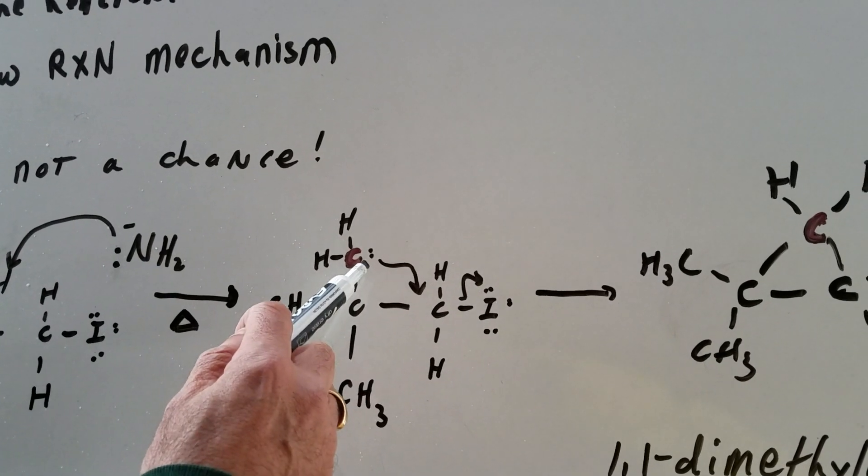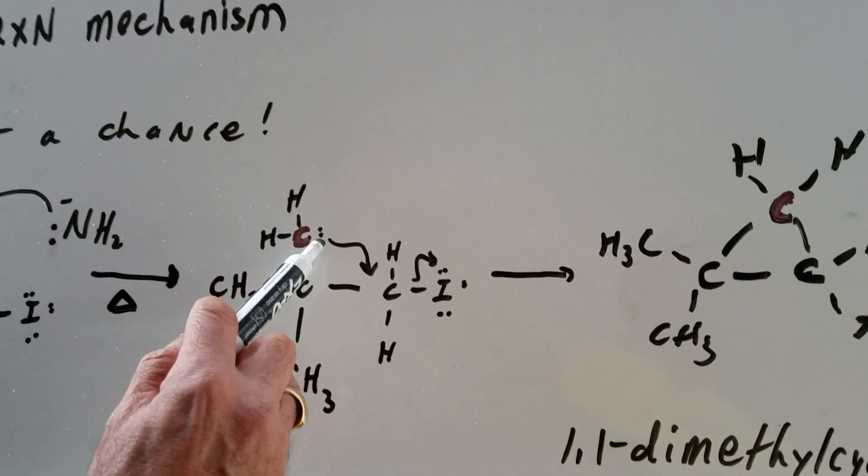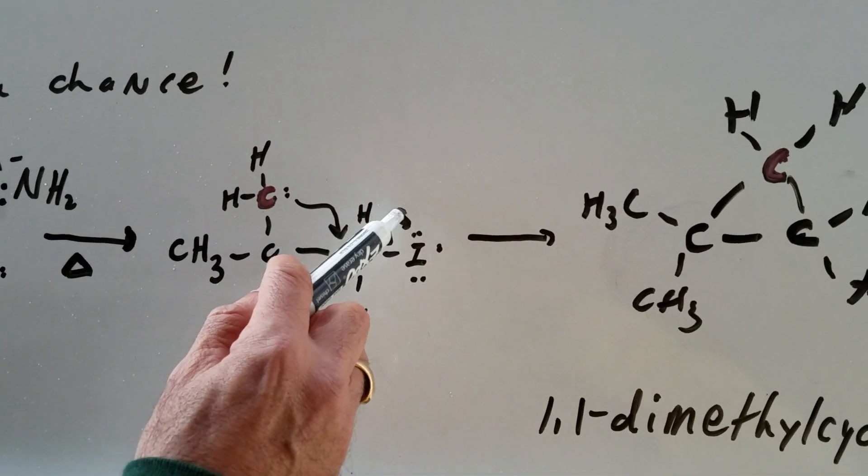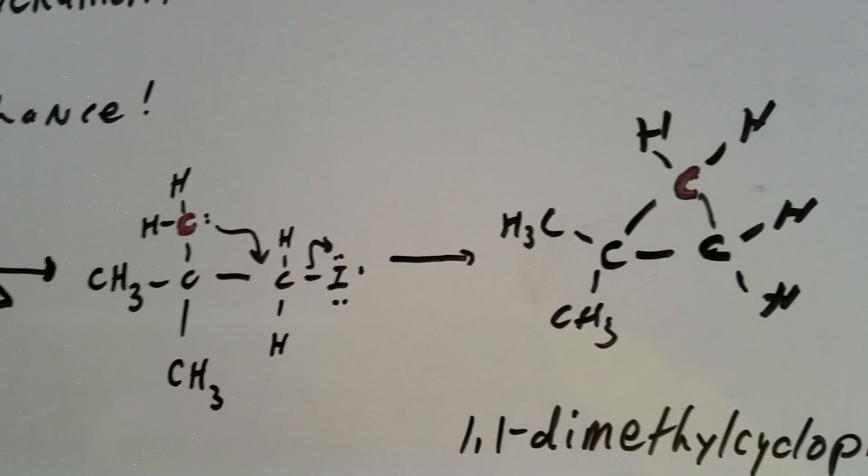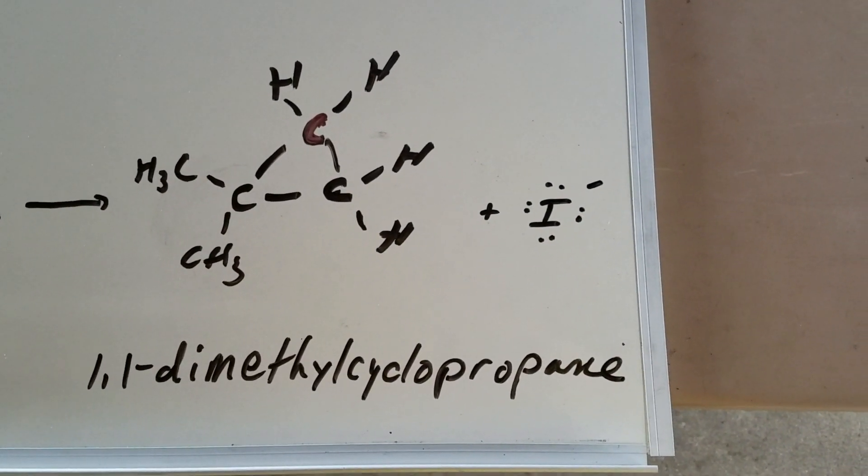And now I'm able to do an intramolecular SN2. Notice, I can come across here. I can eliminate the iodide. And I can form the product. And the product was formed in pretty good yield.